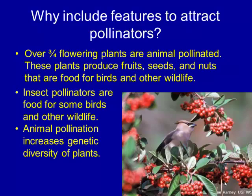That includes crops pollinated by animals plus crops whose seeds require animal pollination. Another possibility is you're not a gardener, but maybe you like to watch wildlife. Three-quarters of our flowering plants are animal pollinated. They produce fruits, seeds, and nuts that provide food for birds and other wildlife. So if you have these plants around, you're more likely to have the wildlife around. And the insect pollinators that you attract become food for some birds and other wildlife.